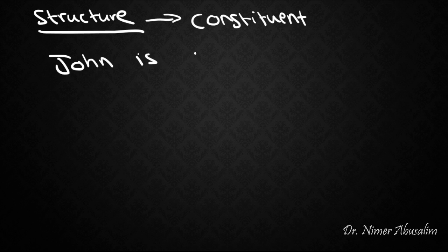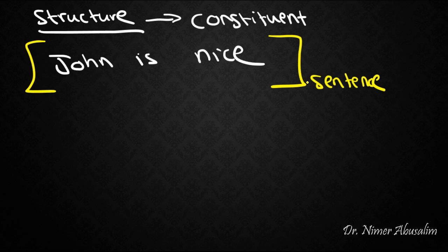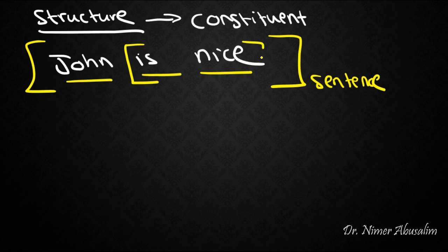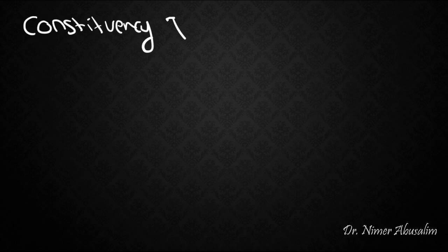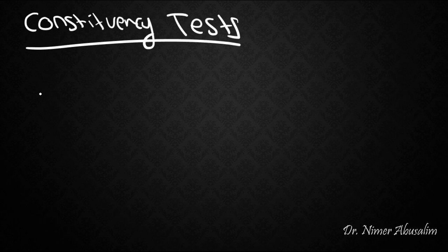'John is nice' — all of this forms a sentence. The constituents of 'John is nice' can also be grouped into units. We somehow feel that 'is nice' is a unit, and then 'John' plus 'is nice' creates the sentence. How do we know what is a constituent and what is not? Luckily there's something called the constituency tests — that's the topic for the next lecture. Stay tuned.